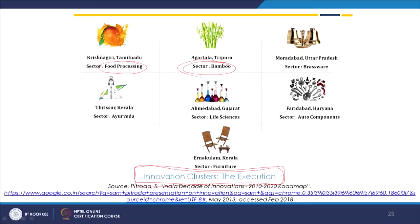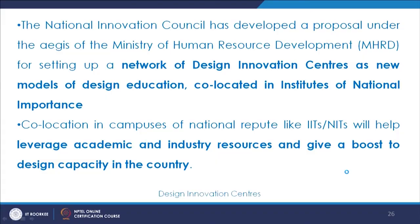Then the brass ware, which is again a craft form, auto components, life sciences, Ayurveda in Kerala, and the furniture sector — all these different kinds of sectors have been identified, the clusters have been identified, and the innovation strategies for them have been developed and are being executed in different phases.